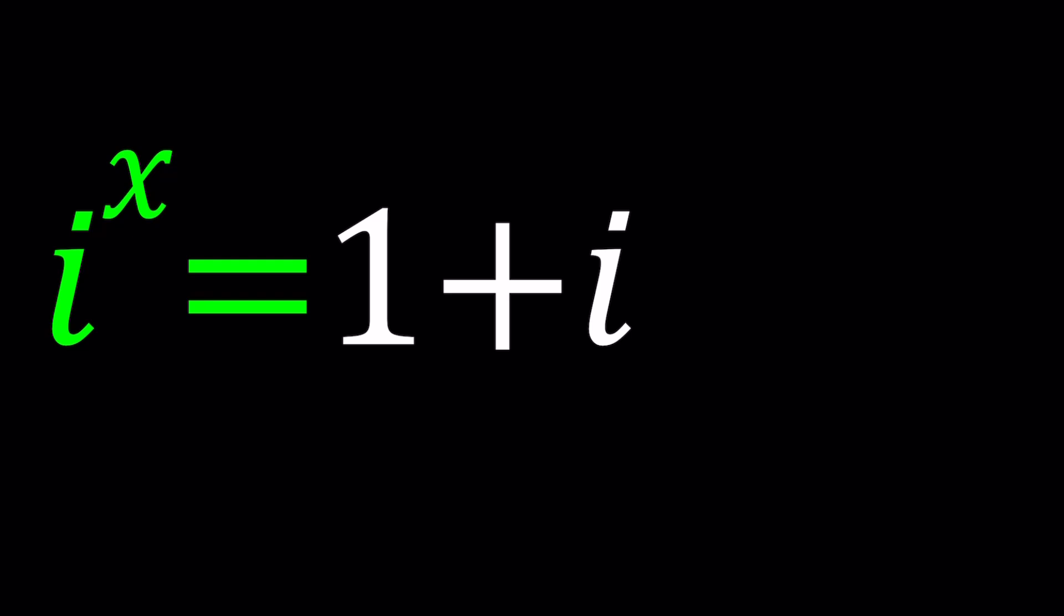So we have i to the power x equals 1 plus i. i is basically one of the square roots of negative 1 or you can also define it as the number whose square equals negative 1. So it's not a real number and 1 plus i isn't a real number either. So how do you find x?